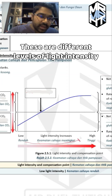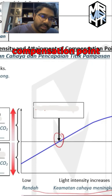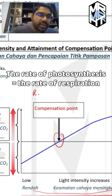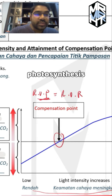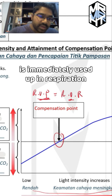These are different levels of light intensity. At this particular point, this is the compensation point. At the compensation point, the rate of photosynthesis equals the rate of respiration. That means whatever glucose is produced in photosynthesis is immediately used up in respiration.